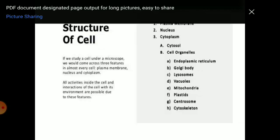The structure of the eukaryotic cell has many components. The main components are the plasma membrane, nucleus, and cytoplasm. Everything within the plasma membrane is called the protoplasm. The nucleus is the center of the cell, and the cytoplasm is the fluid present between the plasma membrane and nucleus. Within the cytoplasm are cell organelles — membrane-bound structures that perform different functions. These include endoplasmic reticulum, Golgi body, lysosome, vacuoles, mitochondria, plastids, centrosome, and cytoskeleton. Note that prokaryotic cells have no cell organelles.